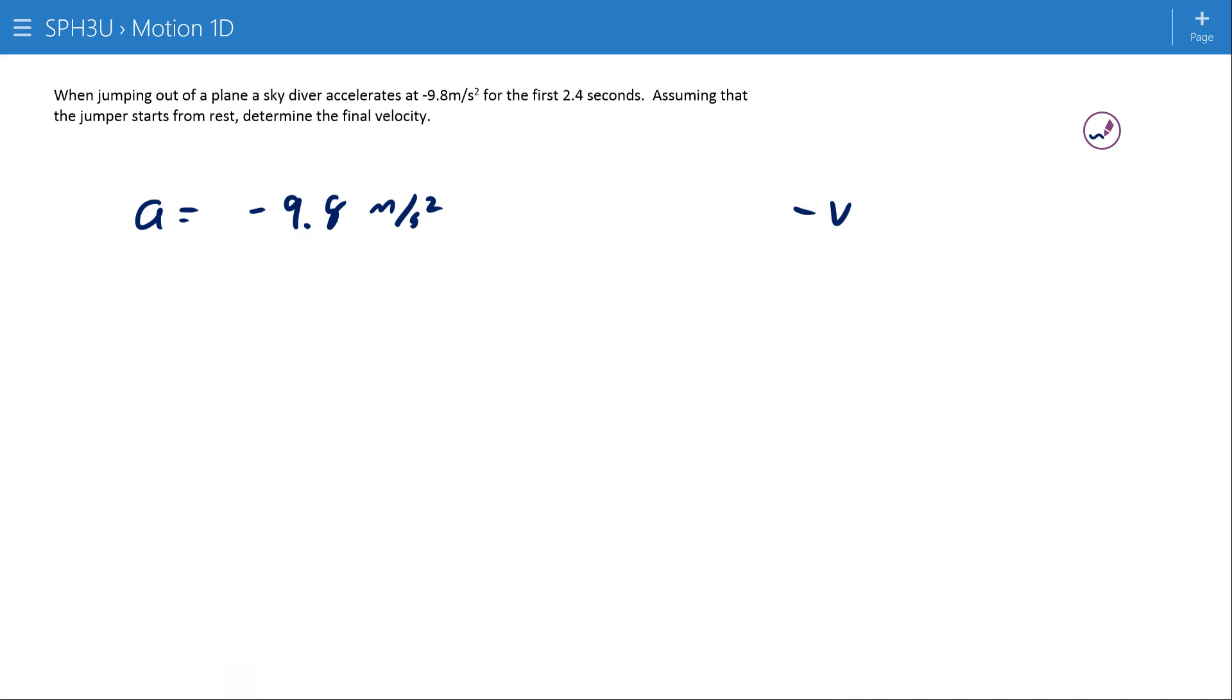The negative here, by the way, refers to the direction, and it's made negative because it would be down, and we know that it's fairly standard to call up our positive direction.